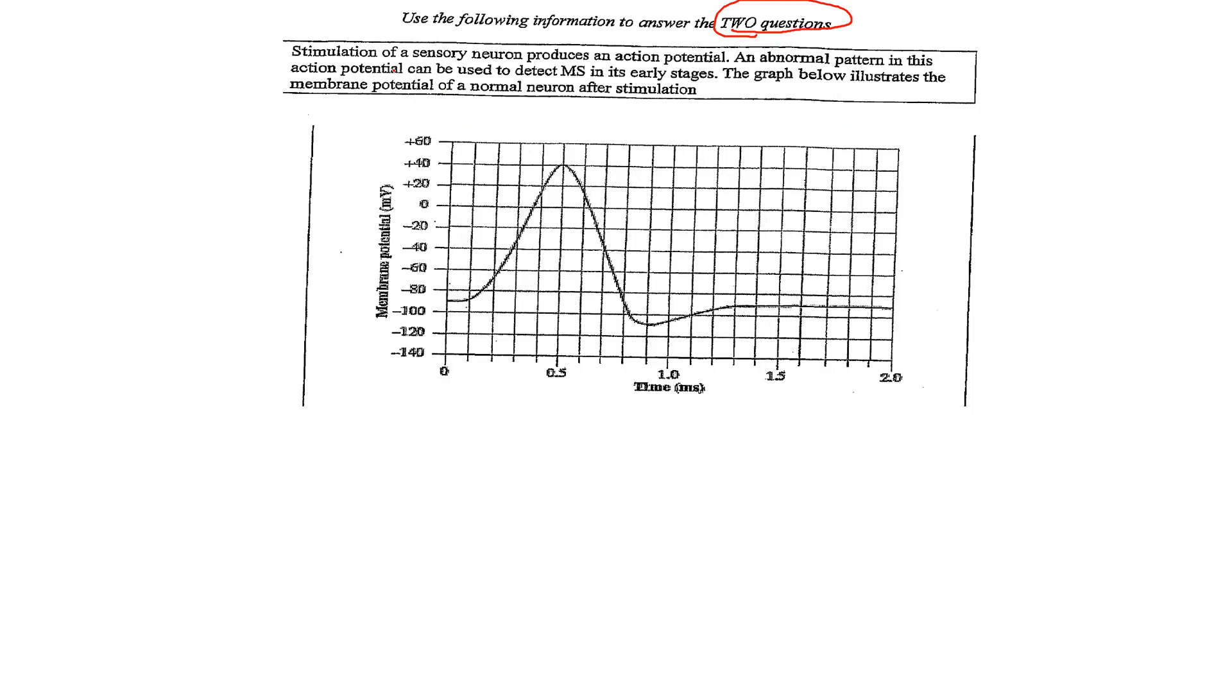Then we've got to just read it quickly and see if there's anything that we recognize. Stimulation of a sensory neuron produces an action potential. Abnormal pattern of action potential can be used to detect MS, multiple sclerosis, in its earlier stages. The graph illustrates the membrane potential of a normal neuron after stimulation. Really important that we start to look at the x and y axis, what they're actually measuring. If we take a look at the y axis, we see that it's measuring millivolts. Look at the x axis, it's measuring time in milliseconds.